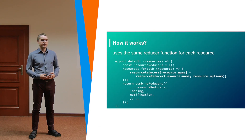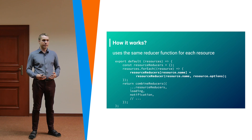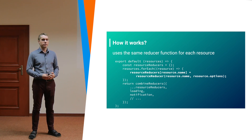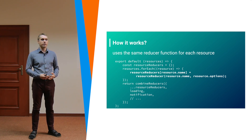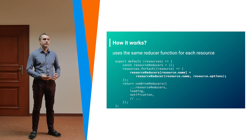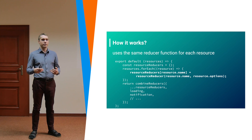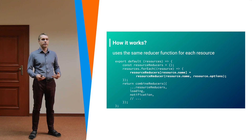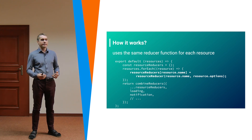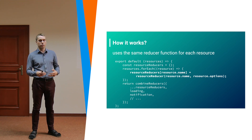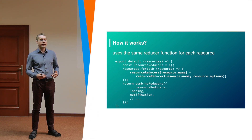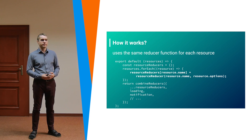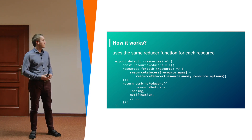Looking at how it works internally, the most important element to check out is how the whole reducer is built. The admin panel cannot build a separate reducer for every model — it needs to use one reducer that is created multiple times for each model you need to store. You create a new instance of a reducer by calling the reducer function and passing the name of the resource and resource options.